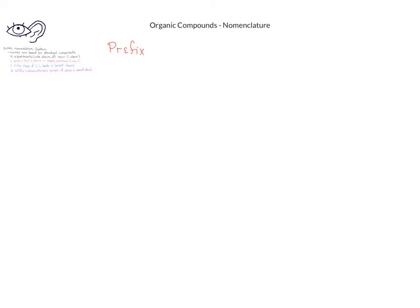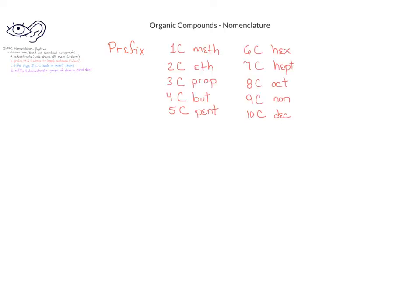Let's begin by looking at the prefix. We want to count the longest continuous chain in the structure, then use number prefixes to indicate the number of carbons. If there's only one carbon in the group, we use the prefix meth. For two carbons, eth. For three carbons, prop. For four carbons, but. Once we get to five carbons, the prefixes should be familiar: pent for five, hex for six, hept for seven, oct for eight, non for nine, and dec for ten.